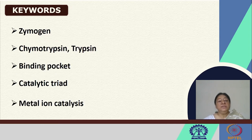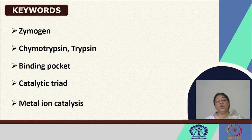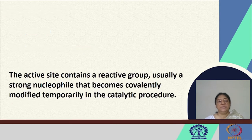We will look at specific proteins — trypsin and chymotrypsin — their binding pockets, what we mean by a catalytic triad, and metal ion catalysis in some examples.